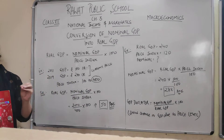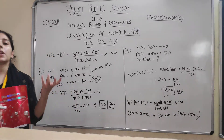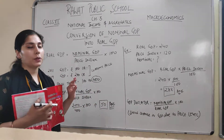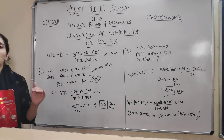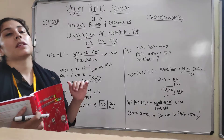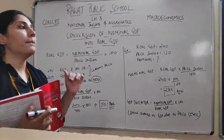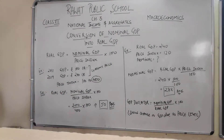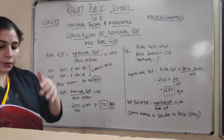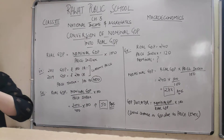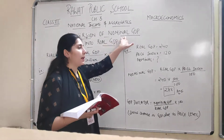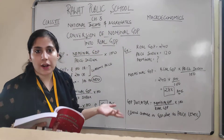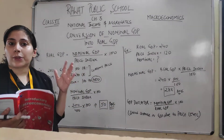Nominal GDP reflects price changes in GDP, whereas real GDP focuses on actual growth in production — the level of output — which is the better indicator of economic growth and contributes to economic welfare. For today, we are going to focus on the conversion from nominal GDP into real GDP. If we are given nominal GDP, we need to convert it because nominal GDP is not a true indicator of growth.